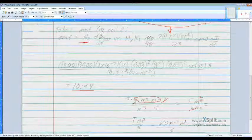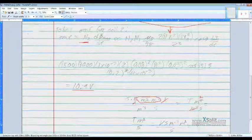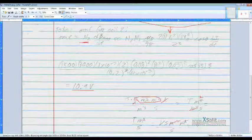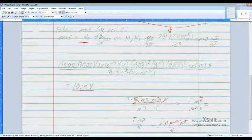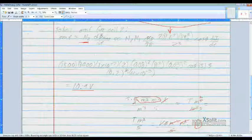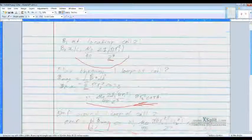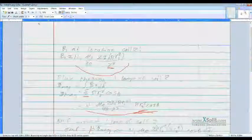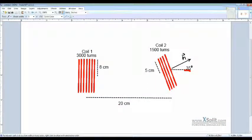Now Tesla is equal to volts times seconds times meters to the negative two. So those will cancel. So we just get volts. And it's EMF, so we should get volts. So that checks out. And that's the problem.